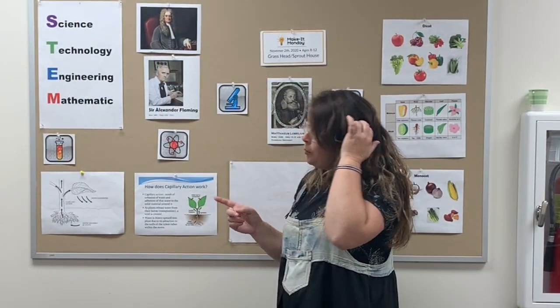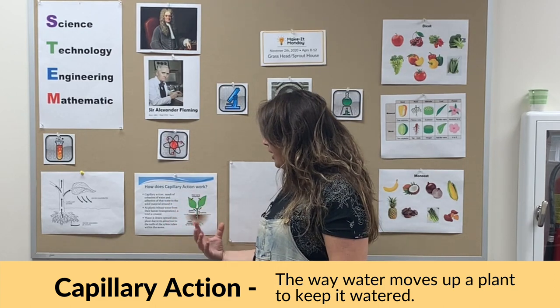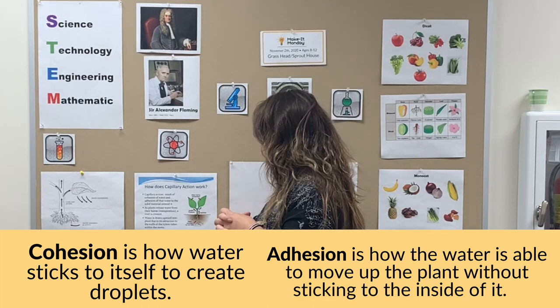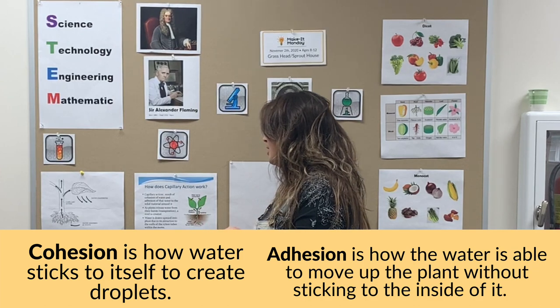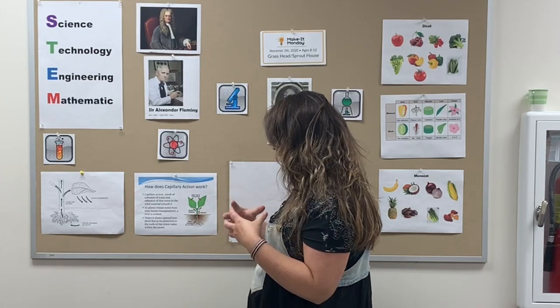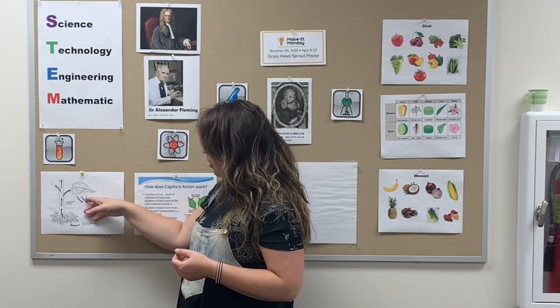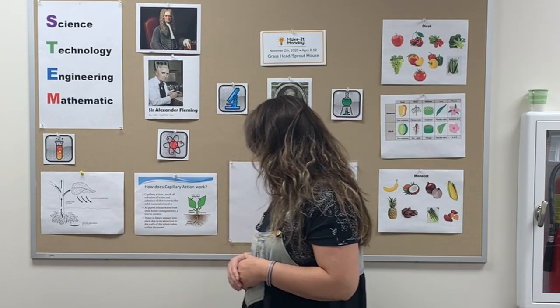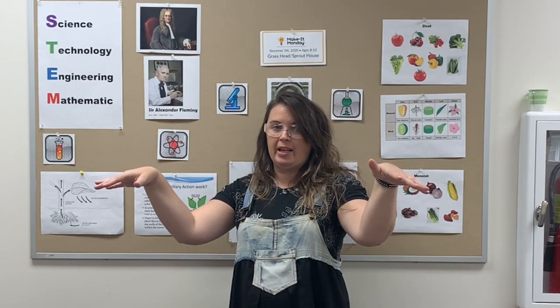One more thing to talk about — what's happening when we water our plants is called capillary action. Capillary action is the result of cohesion of water, which means it coming together, and the adhesion of the water to the solid material around it. Adhesion means it likes to stick to the solid. Like if you ever watch water, it'll gravitate toward things — that's adhesion. As plants release water from their leaves, kind of like this diagram here, this is water evaporation or transpiration. A void is created so it kind of helps as it goes out of the plant as a vapor.